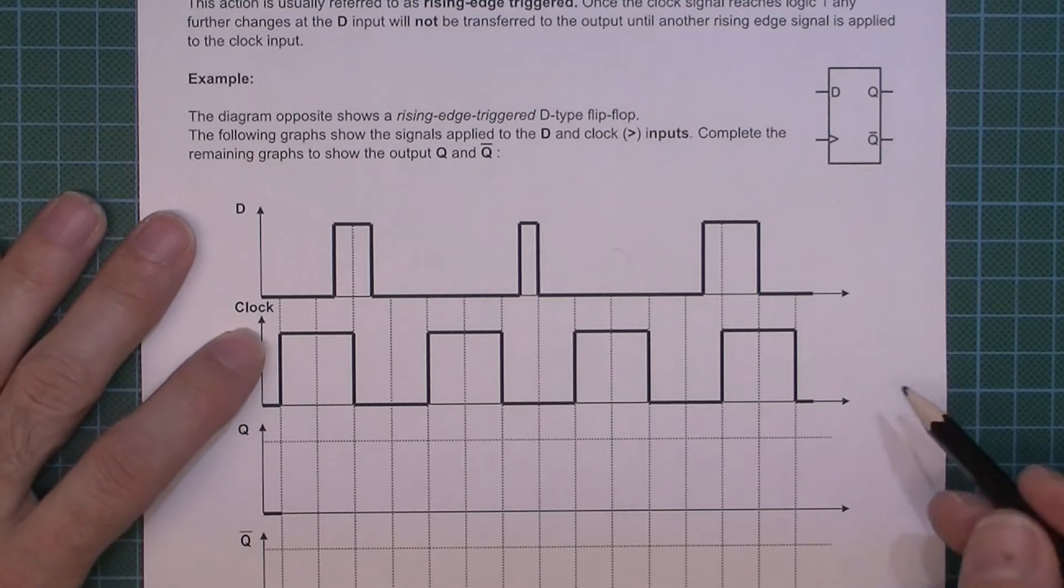A data input, that's why it's called D, and then there's also a clock, an output Q, and this Q bar means not Q. So the Q bar, or the not Q, is just the inverse of Q.